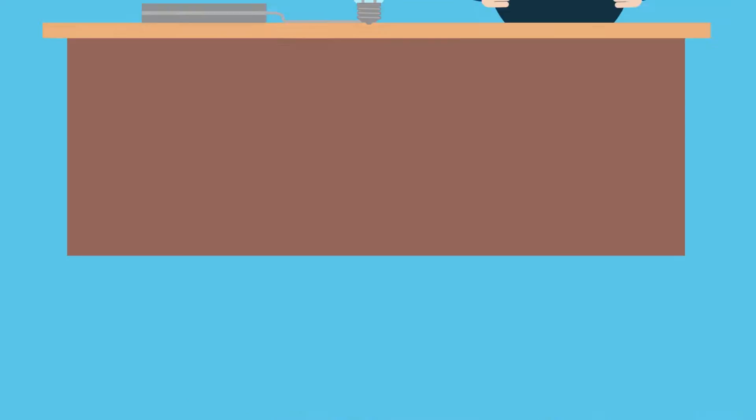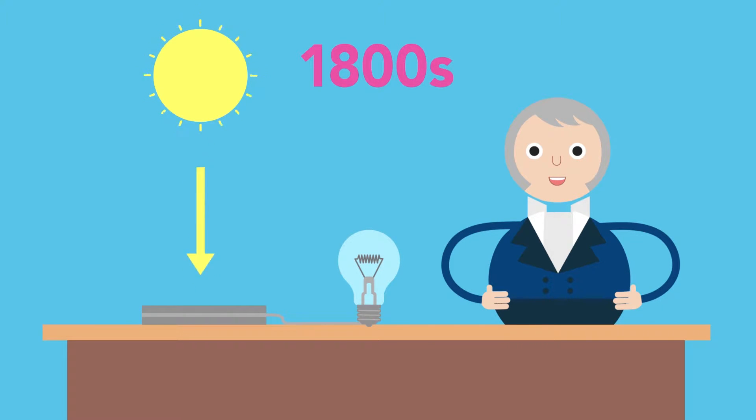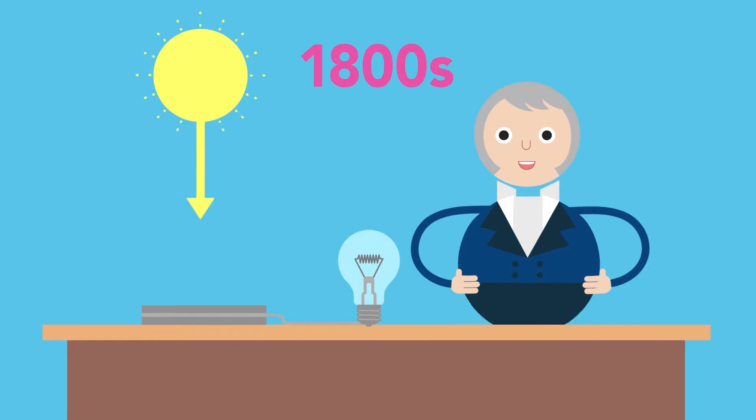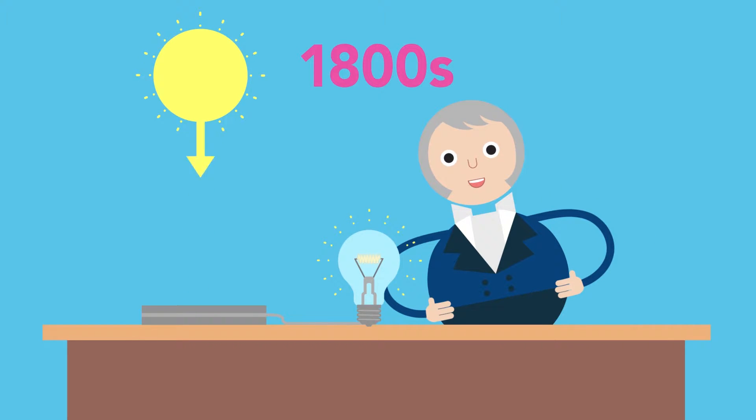However, it wasn't until the 1800s that scientists began to experiment with solar energy as we know it today, proving that a solid material could change light into electricity without heat or moving parts.